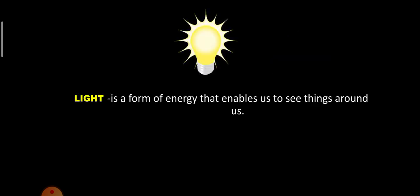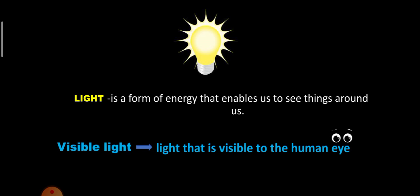Light is a form of energy that makes us see things around us. The light that is visible to the human eye is called visible light.